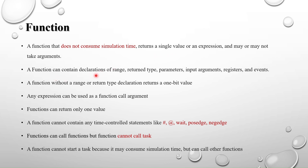A function can contain declarations of range, return type, parameters, input arguments, registers, and events. The range is something like bit [7:0] or [8:0]. You can define the return type — whether it is int, logic, reg, or anything — and you can also provide parameters and input arguments.